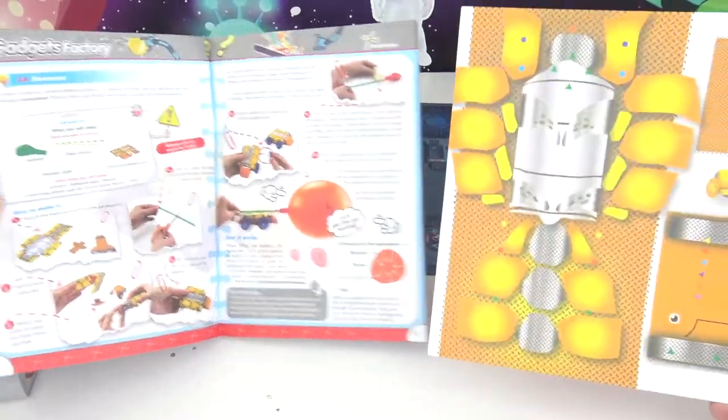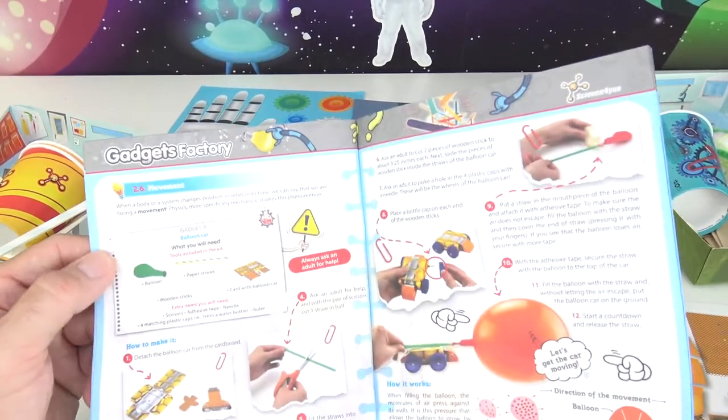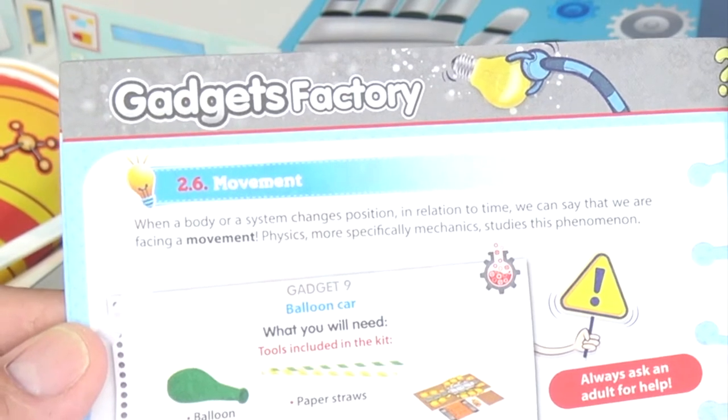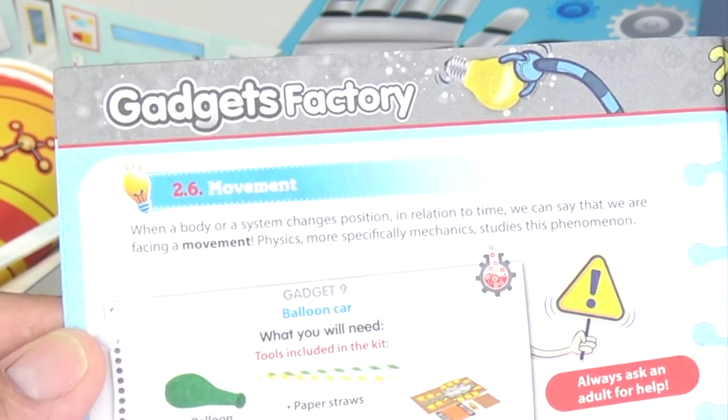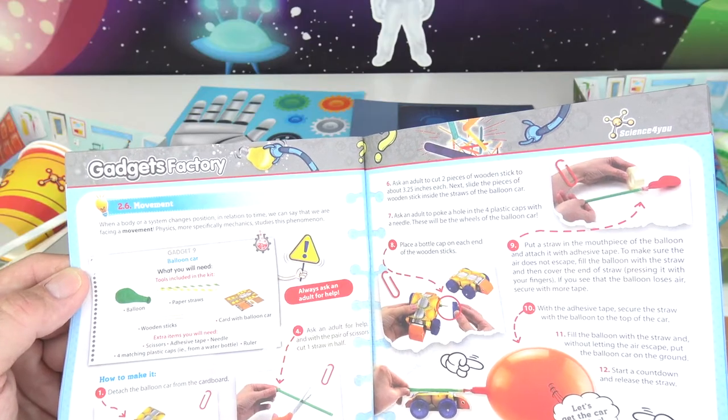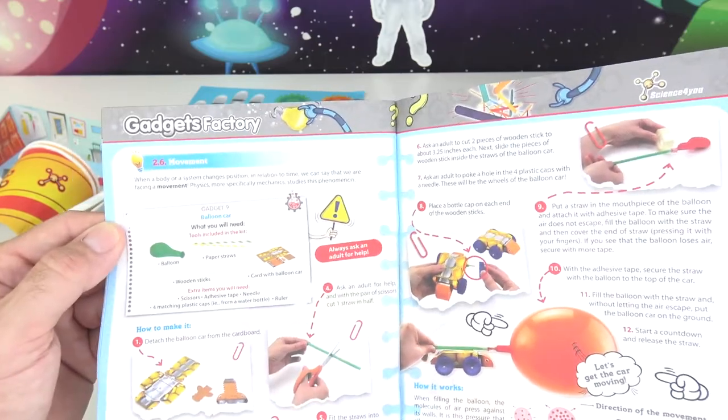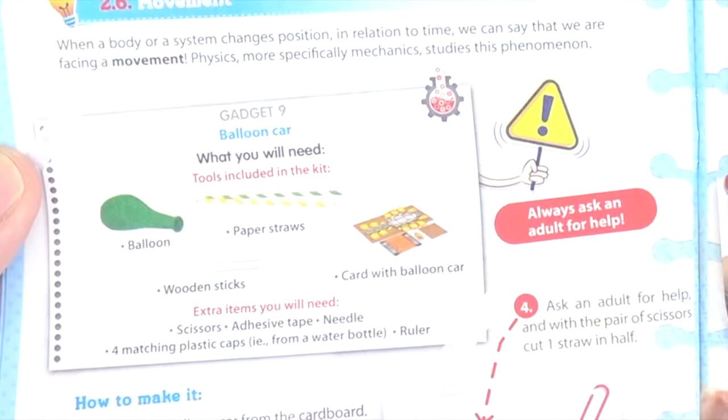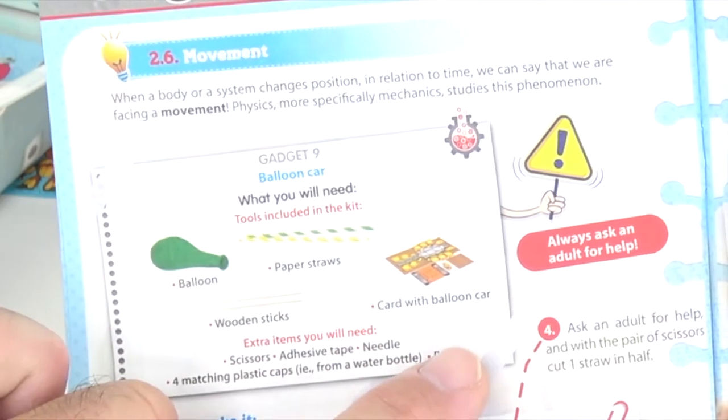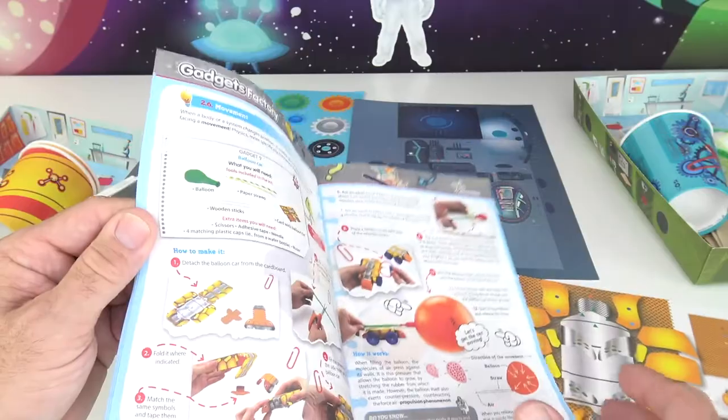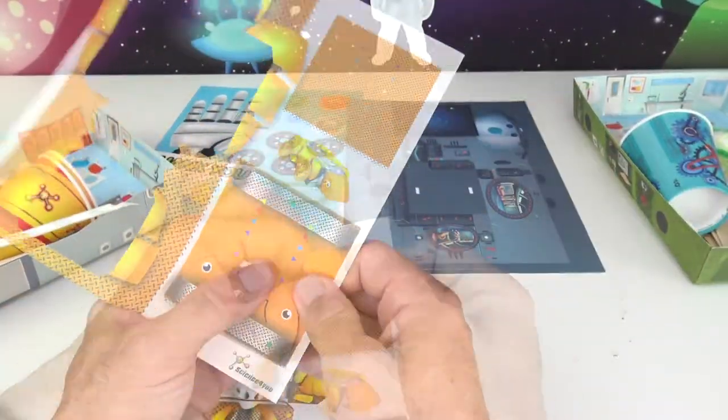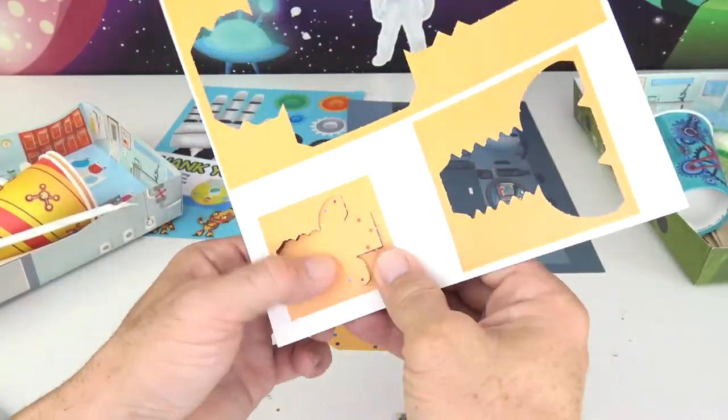So on the top, it says movement. When a body or a system changes position in relation to time, we can say that we are facing a movement. Physics, more specifically mechanics, studies this phenomenon. What you will need. Okay. So it looks like we need some paper straws, a balloon, some wooden sticks, a card with balloon car. Oh, we got that. And how to make it. Go with step number one.